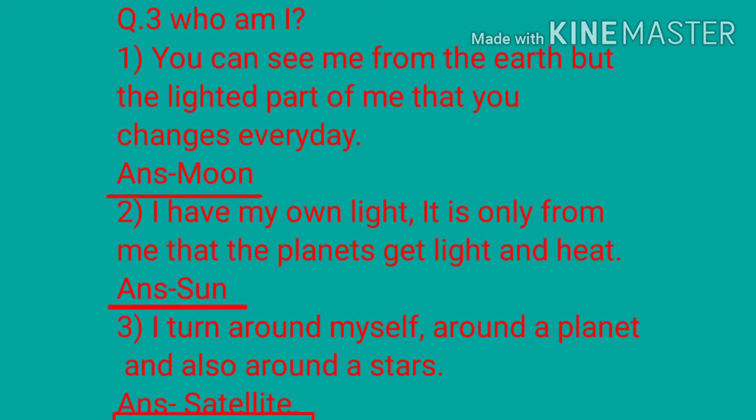Question Number 3 — Who am I? First: You can see me from the Earth, but the lighted part of me that you see changes every day — answer is Moon. Second: I have my own light; it is only from me that the planets get light and heat — answer is Sun. Third: I turn around myself, around a planet, and also around the stars — answer is Satellite.